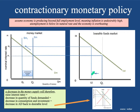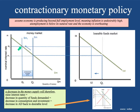Therefore, the government is going to use the monetary tool it has to contract the money supply. There are certain ways in which it can do it, but in general, the government is going to say we need to have fewer dollars cruising around the economy. So we're going to contract the monetary policy, cut the supply of money. Simple supply and demand rules will show you that interest rates will go up.